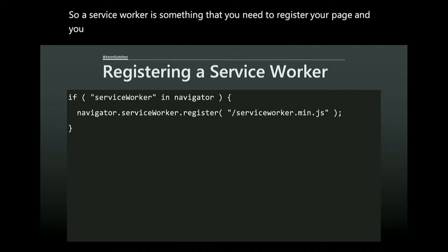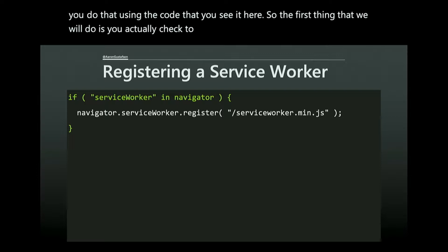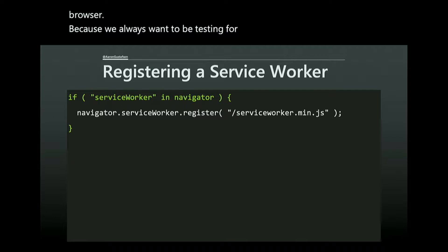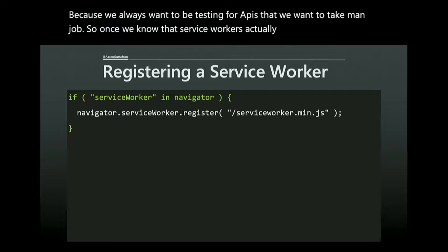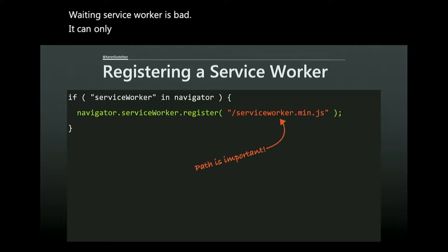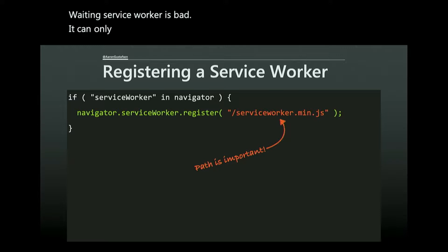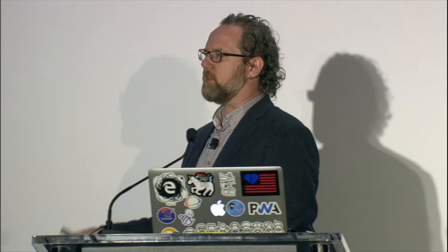A service worker needs to be registered in your page. You first check if service worker is supported by the browser, then call navigator.serviceWorker.register() and supply the path to the service worker JavaScript file, which must exist in its own isolated file. The path is incredibly important — a service worker can only affect its own directory and below. So if it's inside a JS subfolder, it can only affect requests within that folder. You want it in the root of your site.